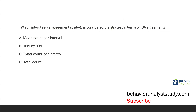Which inter-observer agreement strategy is considered the strictest in terms of IOA agreement? Inter-observer questions can be challenging because there are many types and we don't talk about them a lot. We're thinking about what strategy is going to be the most difficult for two people to agree on when taking data. The options are mean count per interval, trial by trial, exact count, and total count. With total count, we simply add up how many responses were recorded and divide the smaller number by the bigger number. It's a very straightforward IOA procedure — it is not the strictest.